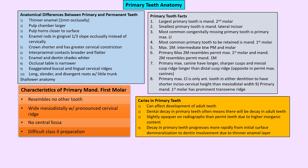Primary teeth have exaggerated buccal and lingual cervical ridges and bulges, and their roots are more flared, more divergent, with less root trunk and shallower anatomy. The largest primary tooth is the mandibular second molar; the smallest is the mandibular lateral incisor. The mandibular first molar is the most unique tooth. The primary mandibular second molar resembles the permanent mandibular first molar with five cusps. The primary maxillary first molar looks like a premolar, while the primary maxillary second molar resembles the permanent maxillary first molar with an oblique ridge and cusp of Carabelli present.